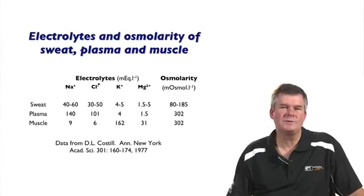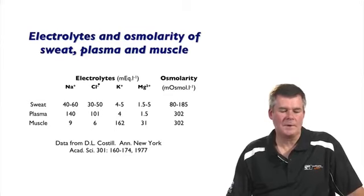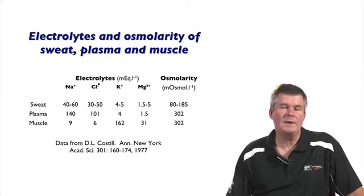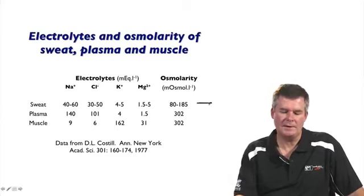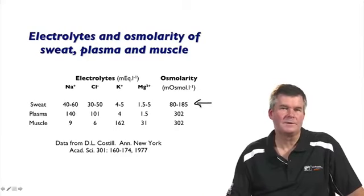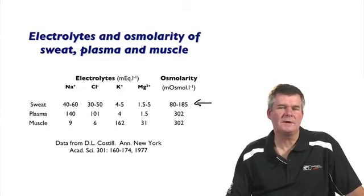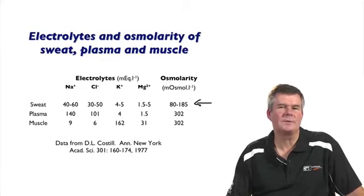If we look at the composition of sweat relative to other body fluids, this table shows the concentrations of four key electrolytes and the osmolarity of sweat compared with plasma and the intracellular fluid within muscle. Sweat is hypotonic, so although with prolonged sweating you may lose significant amounts of electrolyte, the major constituent is fluid, and that has important implications.